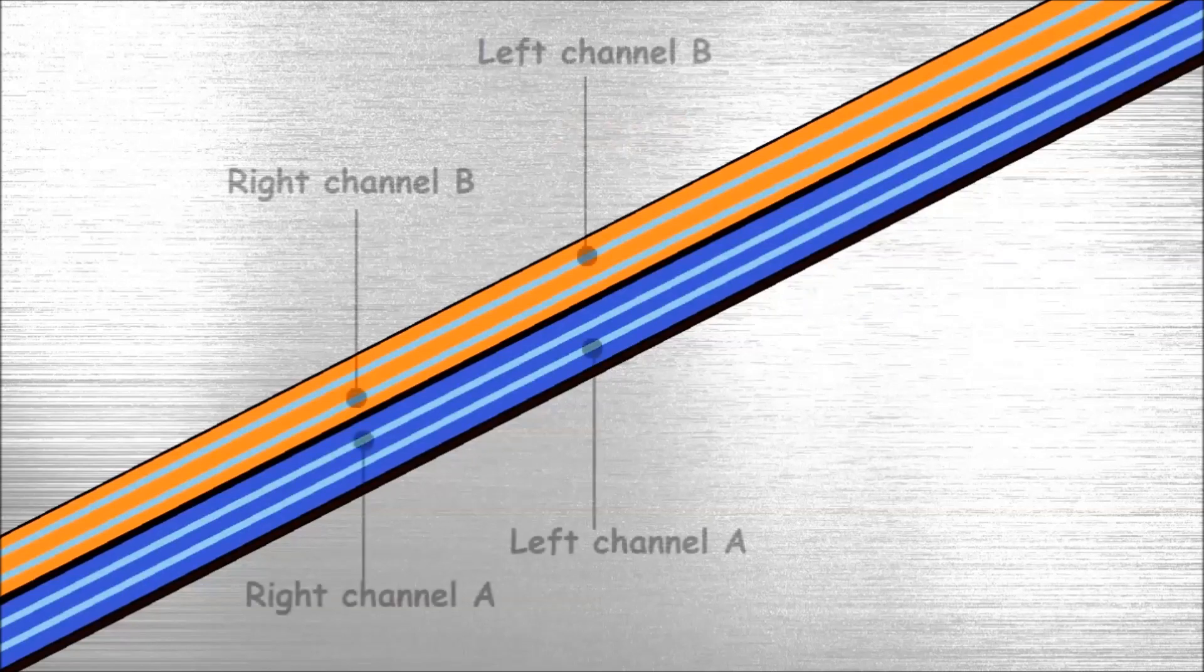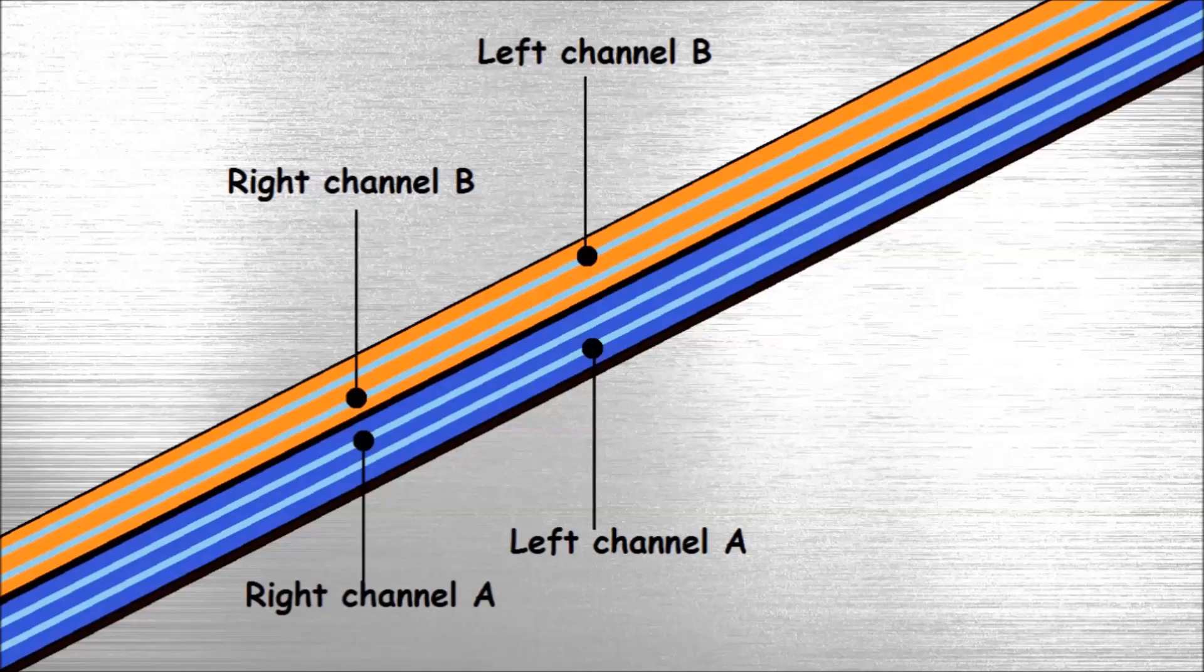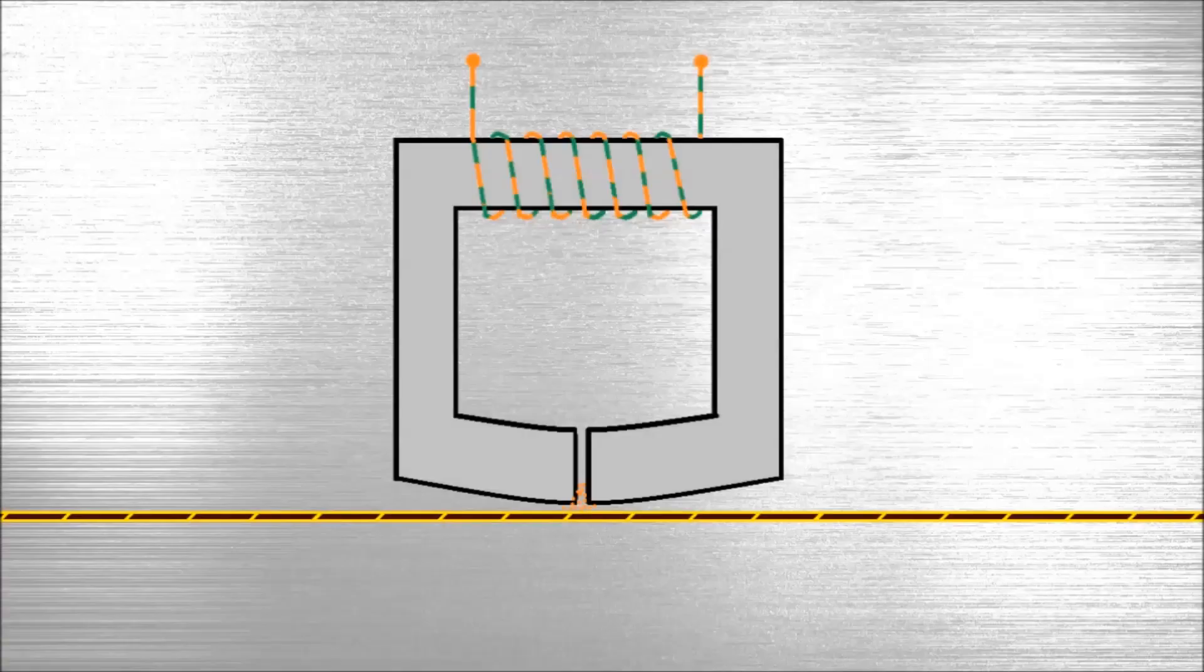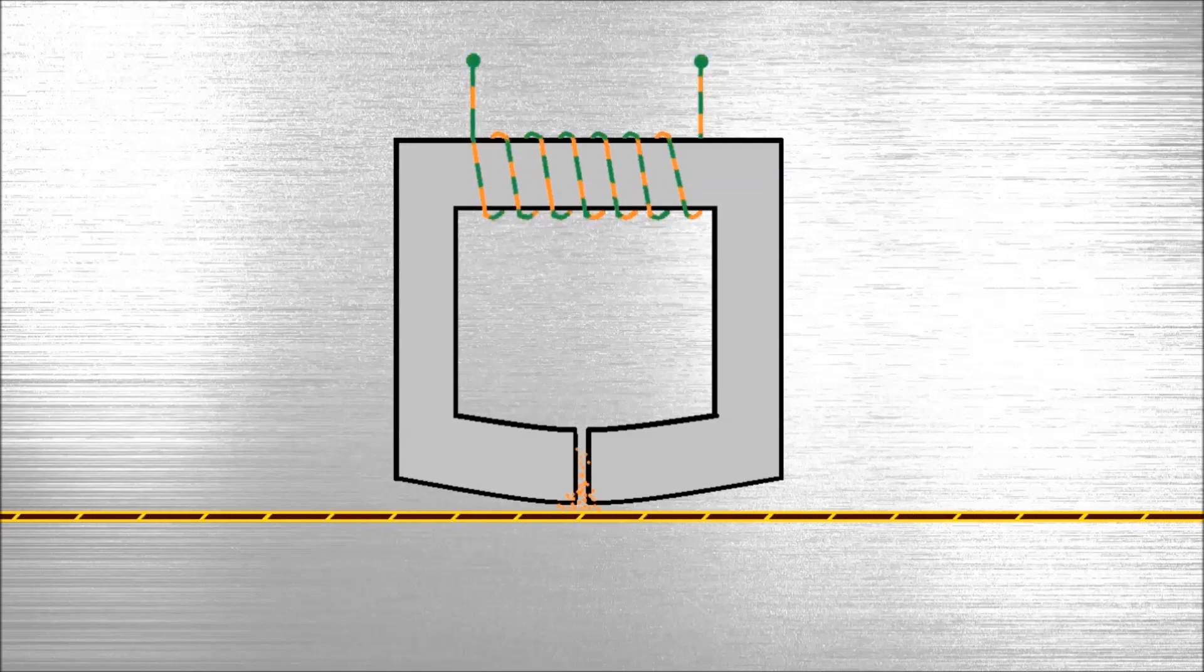Each side has two channels, one for the left audio and the other for the right audio. Together they form the stereo band. These channels line up with the stereo head and the magnetic signal is converted to a small electrical signal. This is amplified and sent to the speakers.